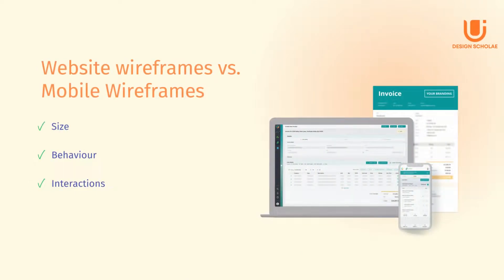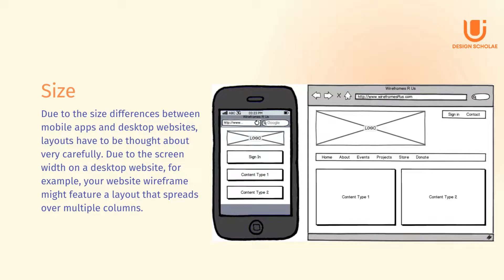Website wireframes versus mobile wireframes. The key points to keep in mind while designing wireframes are: size, behavior, and interactions. Regarding size — due to the size differences between mobile apps and desktop websites, layouts have to be thought about very carefully. A desktop website wireframe might feature a layout that spreads over multiple columns, whereas on a mobile app, the number of columns is usually restricted to one or two. You'll also need to decide whether users see an infinite scroll or whether you want to decrease the number of items per page to display other content beneath.